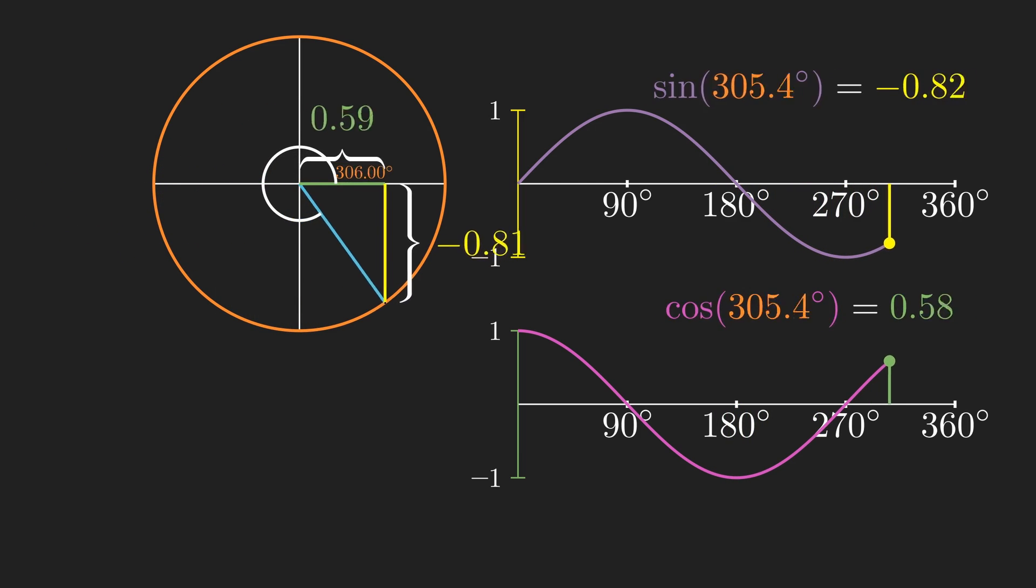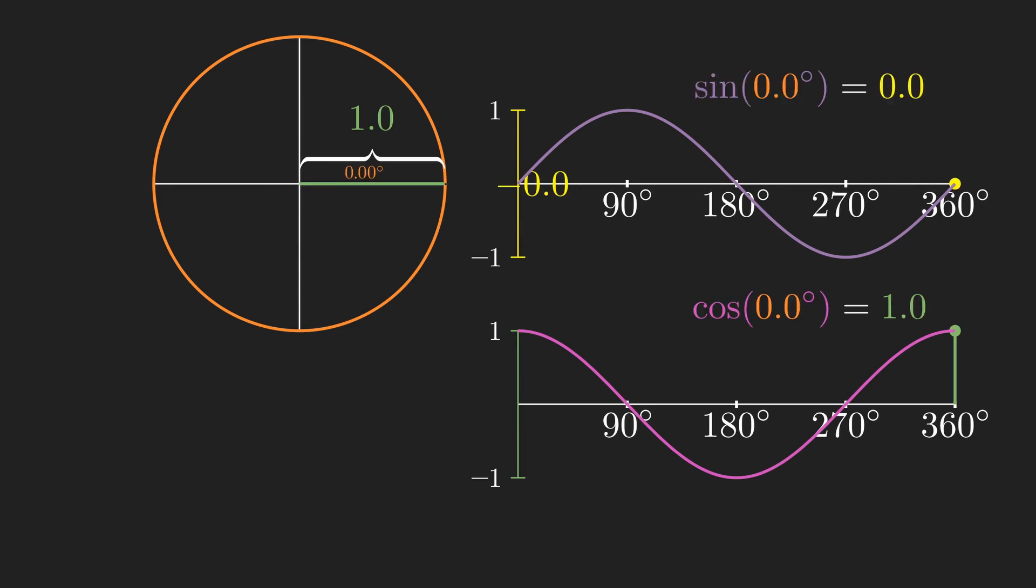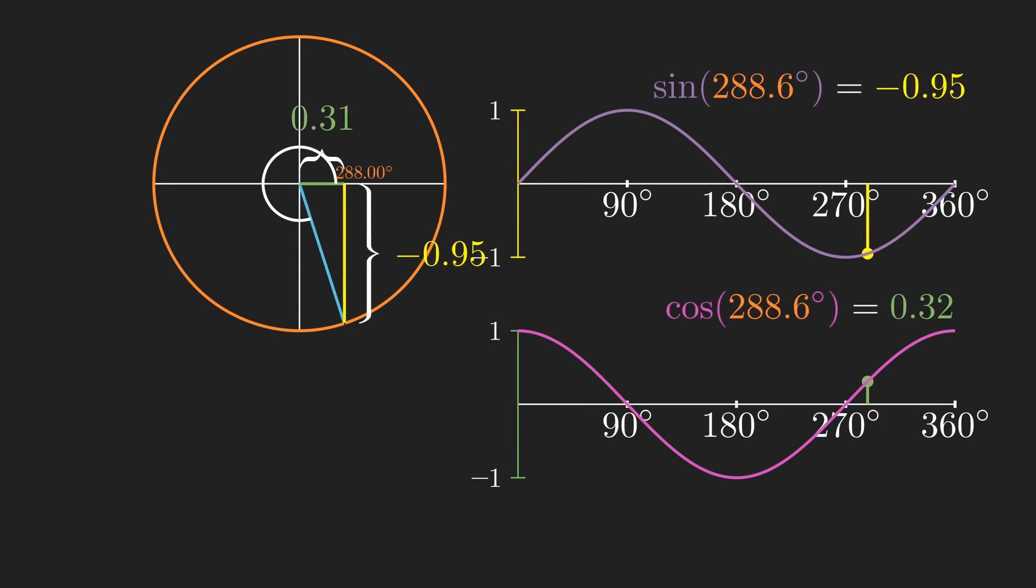This also explains why sine and cosine repeat after 360 degrees. We effectively rotate around our circle and then start again.